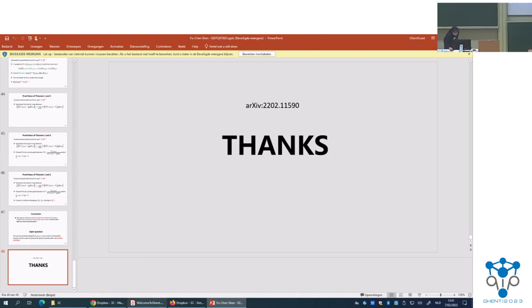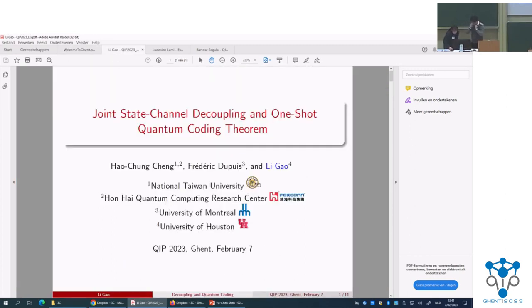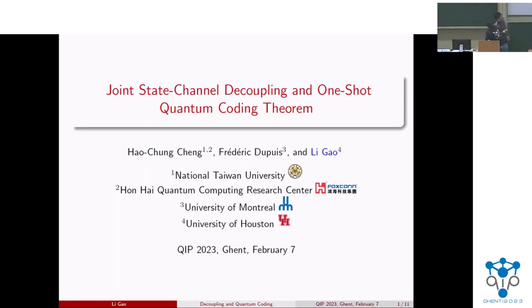We're going to directly follow with the second half of the merged talk and have the questions at the end. The second speaker of this talk is Li Gao. Thanks, Yuchen, for the first half of the talk. For the second half, I will talk about more on quantum decoupling and its application in quantum communication. This is joint work with Hao Zhong Chen and Frederick Dupuis.